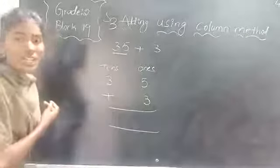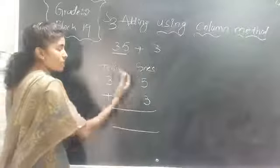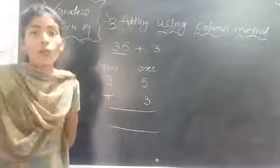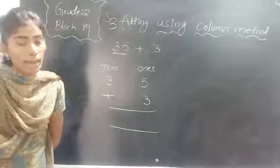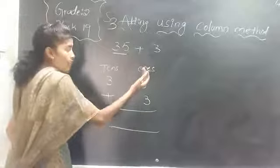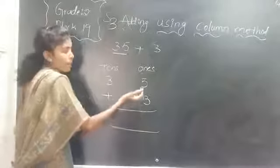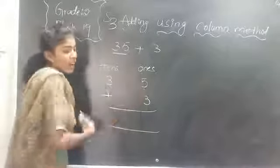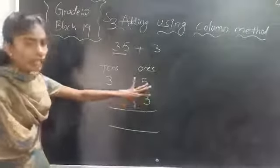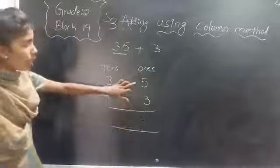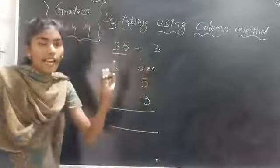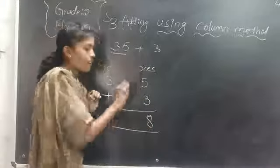Which place value do we have to add first? We have to add the 1s place value every time, in every method — whether you are using expansion or column method, you have to add the 1s place first. Which numbers are in the 1s place? 5 and 3. How can you add 5 and 3 children? You have to keep the bigger number in your mind and count on with fingers for the smaller number. So 5 in mind with 3 fingers: 6, 7. So 8 goes in the 1s place.